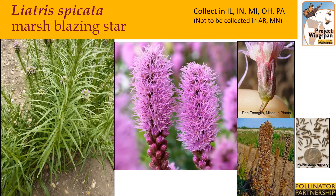Liatris spicata, commonly called marsh, spike, or dense blazing star, is a tall, upright, clump-forming perennial native to moist meadows. It typically grows two to five feet tall. Four- to eighteen-inch long terminal flower spikes produce fluffy, small, but densely arranged deep purple flower heads. The flowers begin to bloom at the top of the spike and open later below. The leaves are linear, up to almost ten inches long, alternate but appearing whorled around the stem. They bloom in the mid to late summer. Seed collection typically occurs around mid-September to early October. Cut off the entire flower head once the seeds are dark and plump, and remove the fluff when you're home from the field and out of the wind.